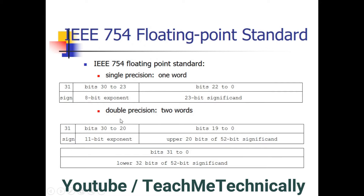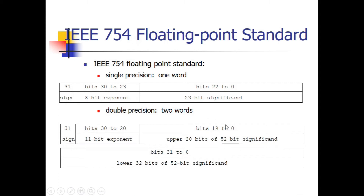In double precision, the most significant bit is the sign bit, the next 11 bits are reserved for the exponent, and the remaining 52 bits are for the significand. So the differences are: single precision has 32 bits while double precision has 64 bits; in single precision the exponent uses 8 bits while double precision uses 11 bits; and in single precision the significand uses 23 bits while double precision uses 52 bits.